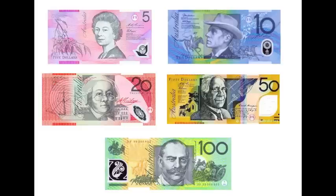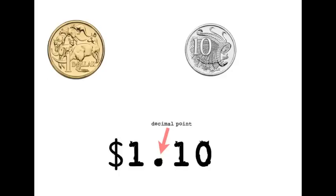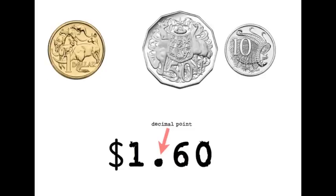How many cents do you think there are in five dollars? Here we've got one dollar and ten cents — one point ten. You can see the decimal point that we learnt about before. This is one dollar and sixty cents, because fifty plus ten equals sixty.